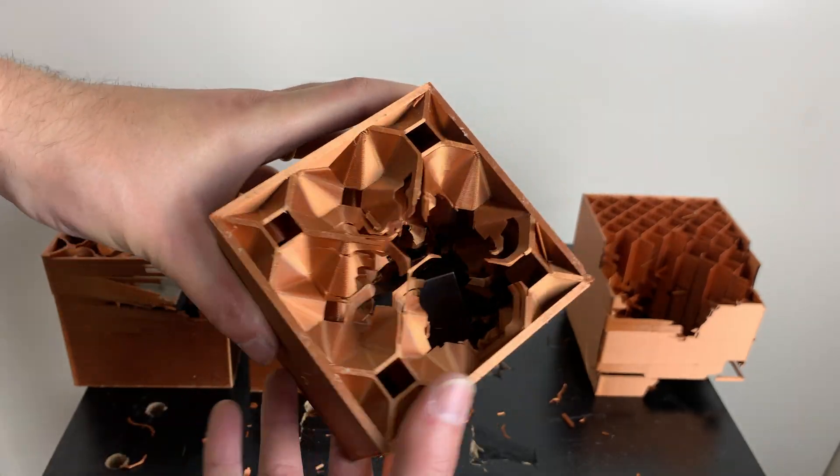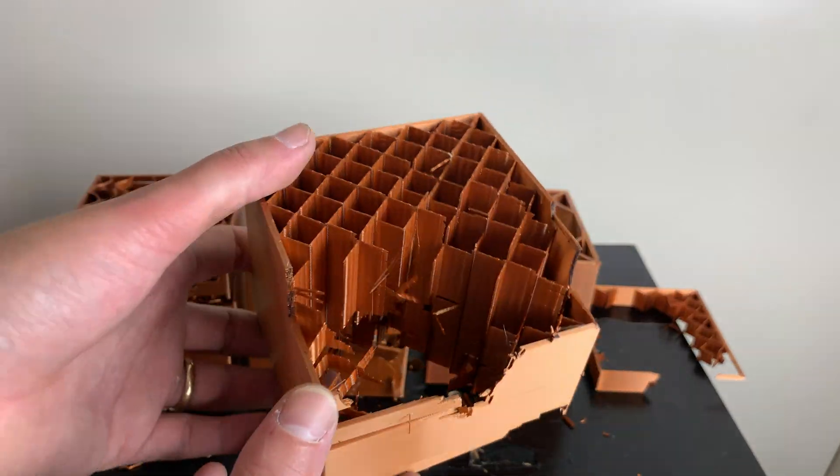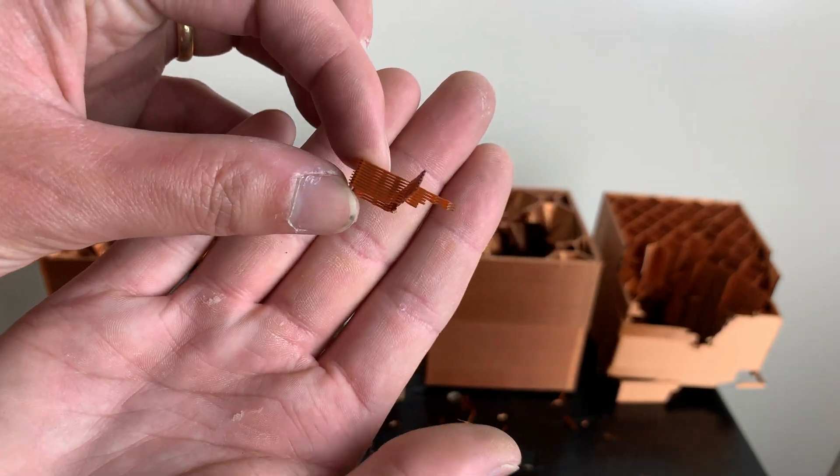The 3D cross infill didn't do that great and the lines infill did absolutely horrible. This is because these lines actually aren't bonded to each other. It makes it very brittle and weak.